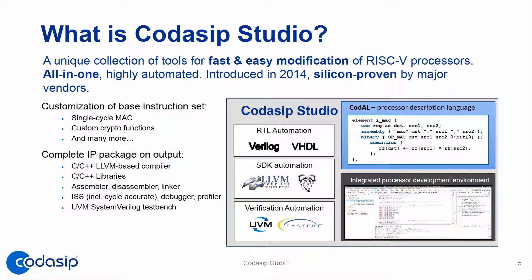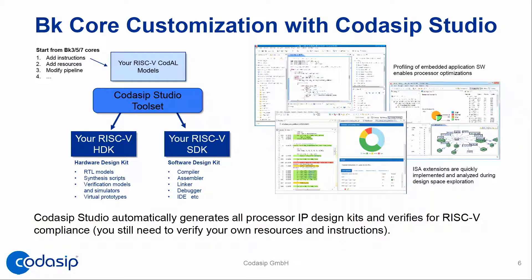Studio is like an add-on — you may use it if you want. You can live with the default BK core. There are several business models: either you're happy with the configuration side — selecting BK3 with IMC, parallel multiplier, debug, trace — or if you need more, you license Studio as an add-on, add your secret sauce, press a button, and obtain fresh RTL and a fresh SDK containing the implementation of your new instructions or microarchitecture tweaks.